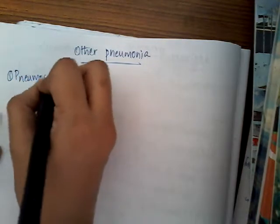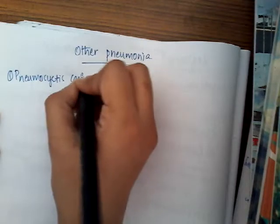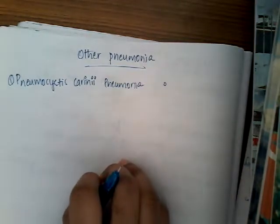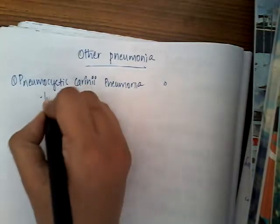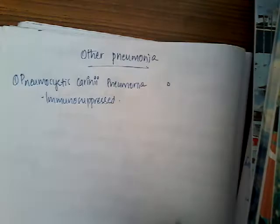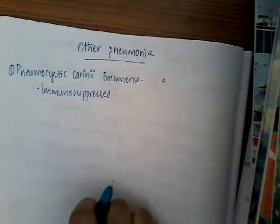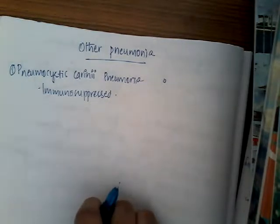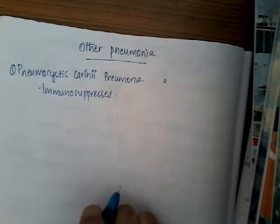One of the most important types of pneumonia is Pneumocystis carinii pneumonia. As the name says, it is caused by the organism Pneumocystis carinii. It is mainly seen in immunosuppressed individuals, including patients suffering from HIV, organ transplant recipients, patients with tumors or cancers, malnourished patients, or those with agammaglobulinemia. In any of these conditions there can be Pneumocystis carinii infection.